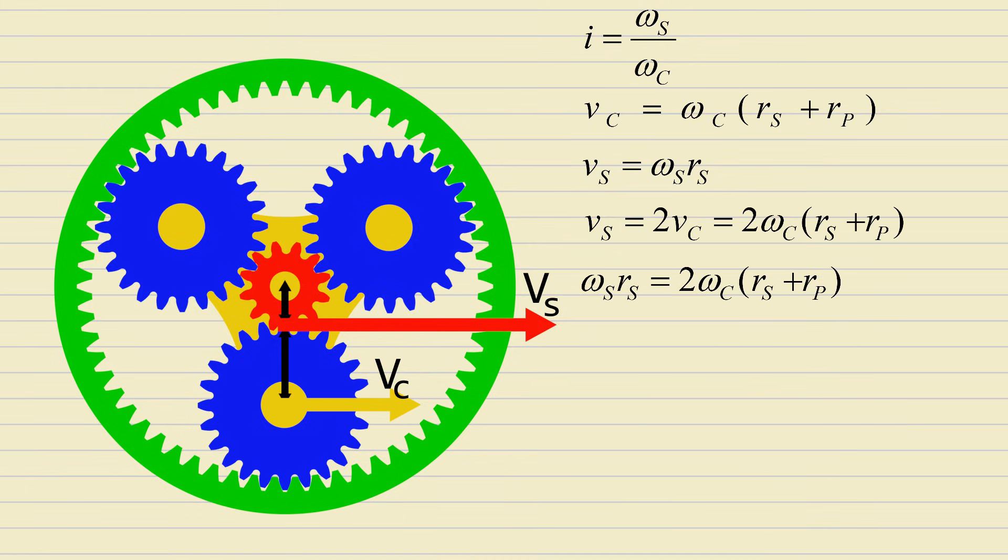This gives us this equation. The gear ratio is omega s divided by omega c. According to the formula we arrived at earlier, the 2 times rp term can be replaced with rr minus rs, which can be simplified too.